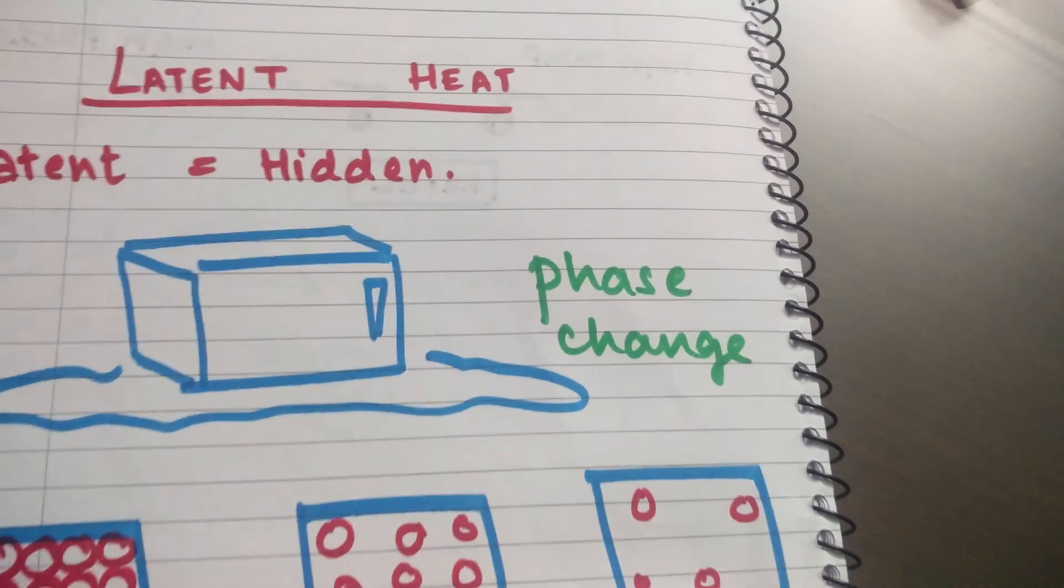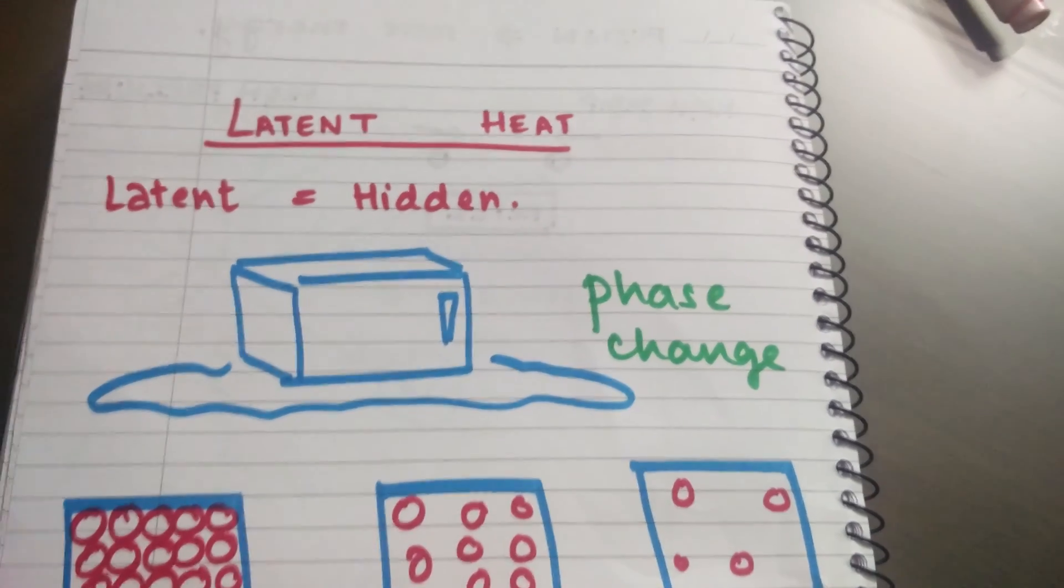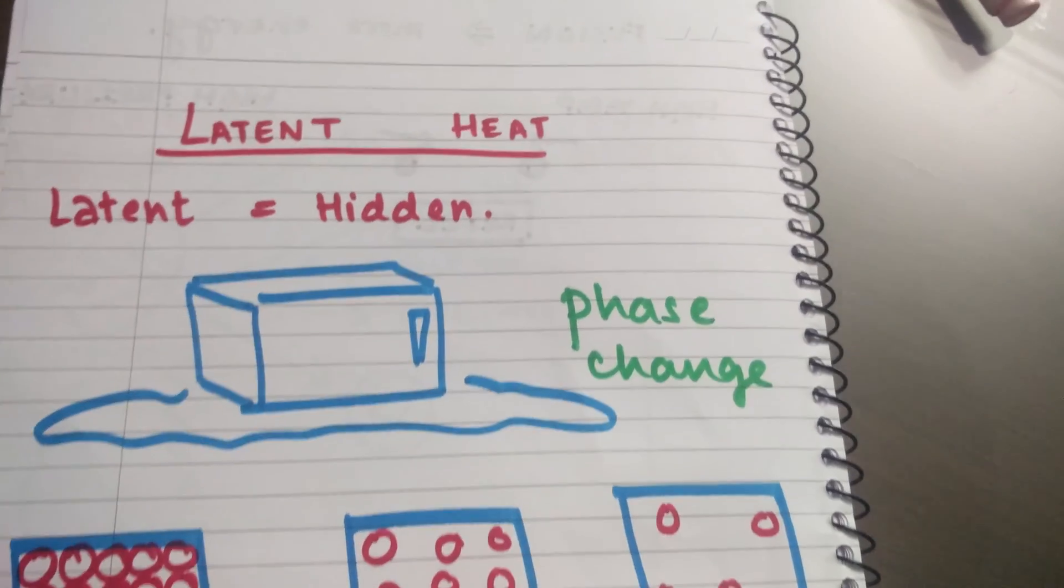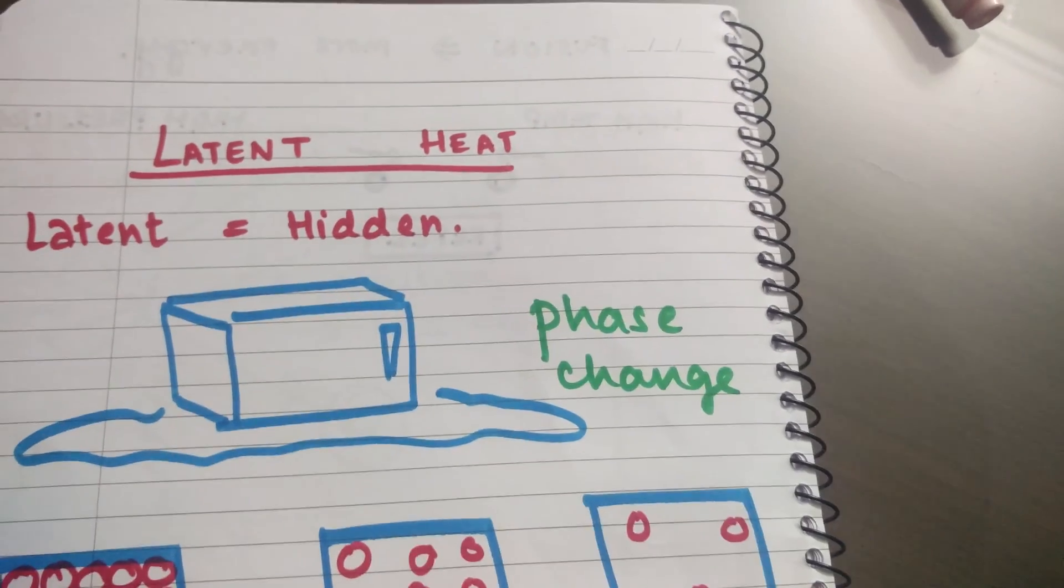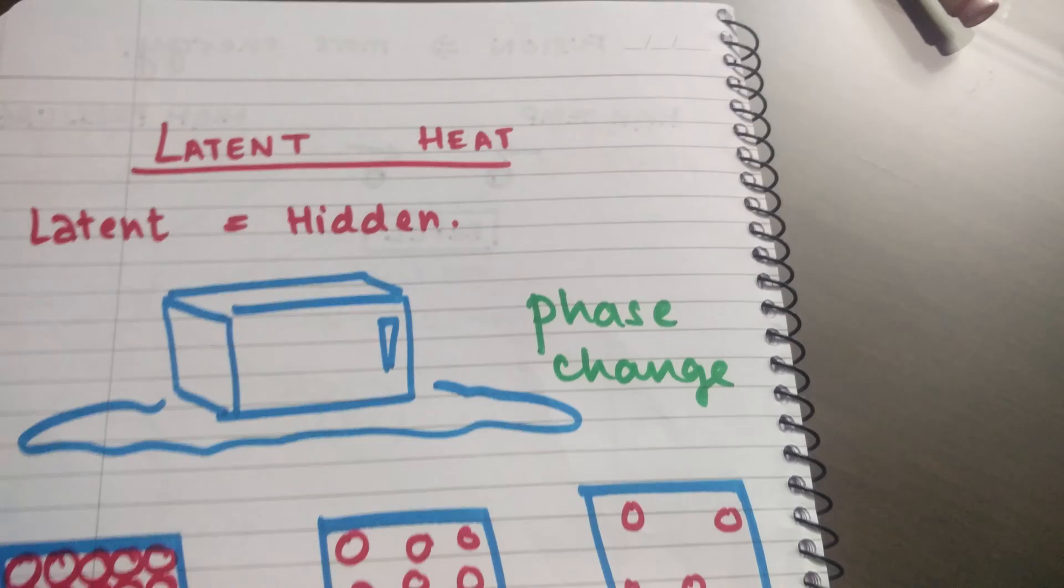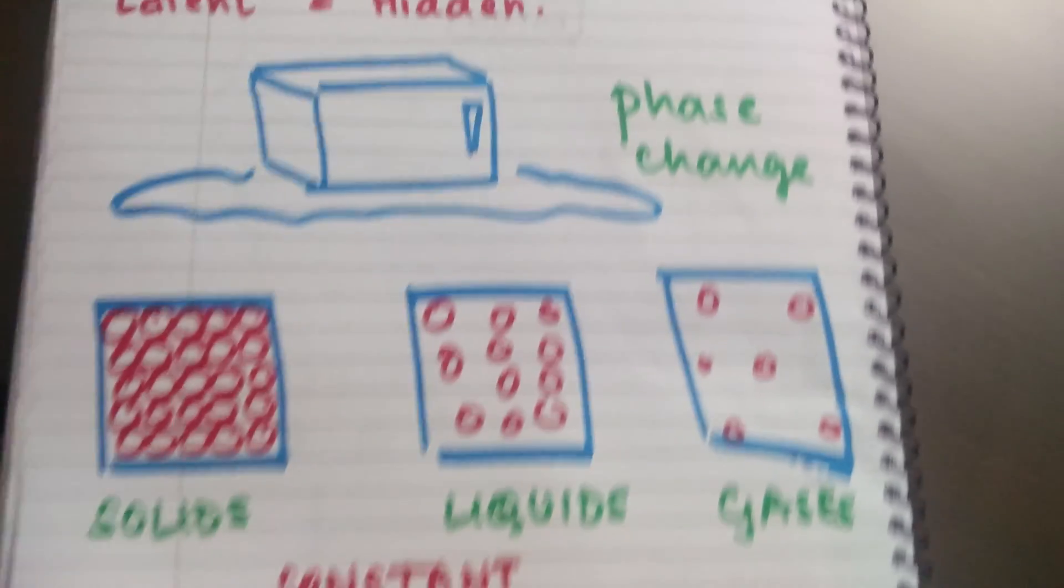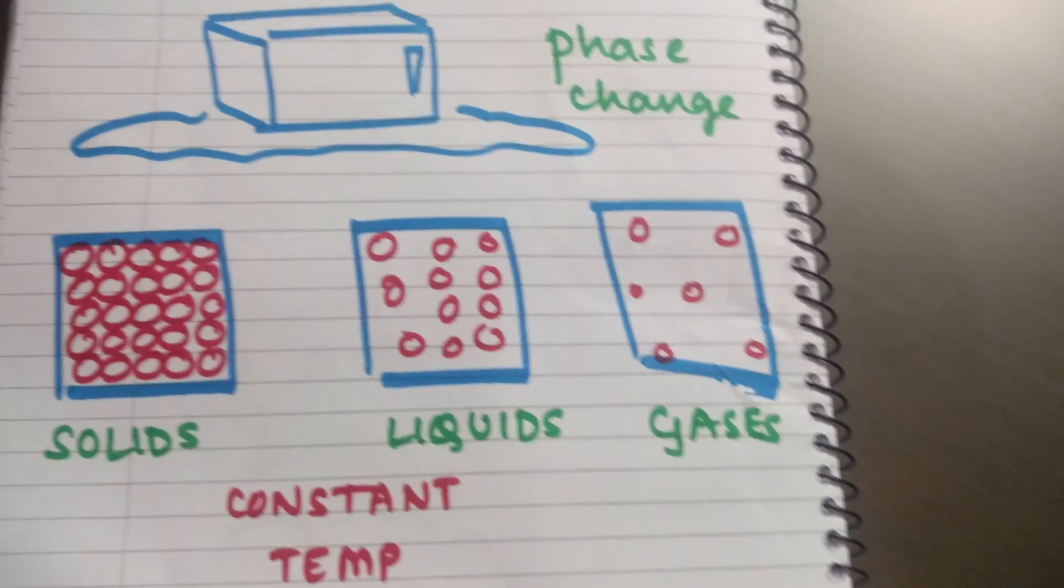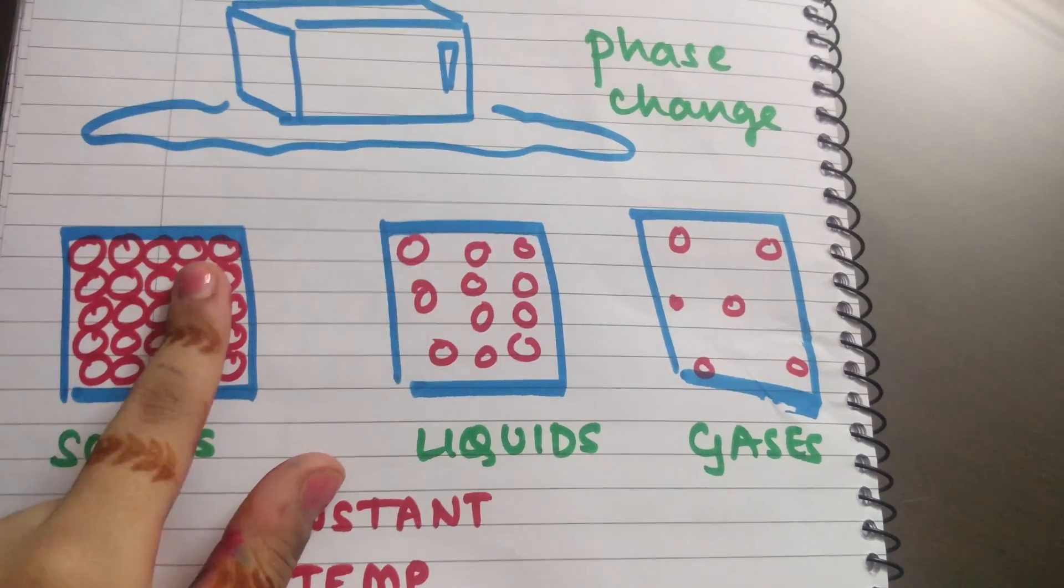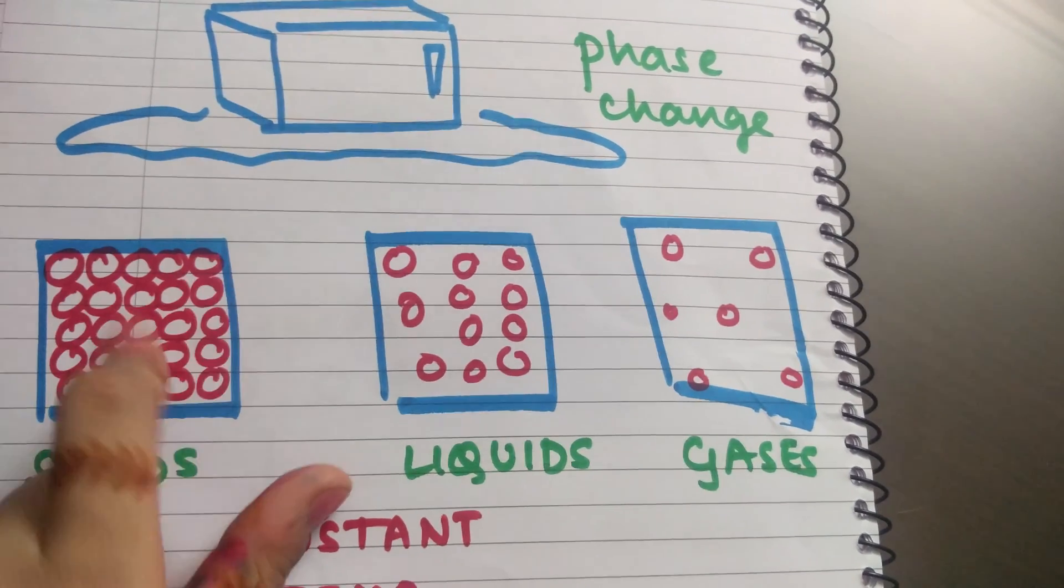But what happens in case of phase change is that all the kinetic energy that you're providing in terms of heat is being used up to make the molecules come closer to each other or spread out. This can be understood by looking at how the molecules are spaced in the solid versus a liquid versus a gas. If I'm melting a solid to form a liquid, all these molecules are going to have an intermolecular force of attraction.